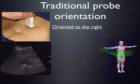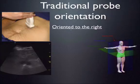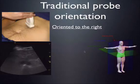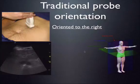Everyone has heard of the three basic anatomical planes: sagittal, coronal, and transverse. In ultrasound, the more common terminology you'll hear is short axis and long axis, which are usually synonymous with transverse and sagittal respectively, and those terms are often used interchangeably.